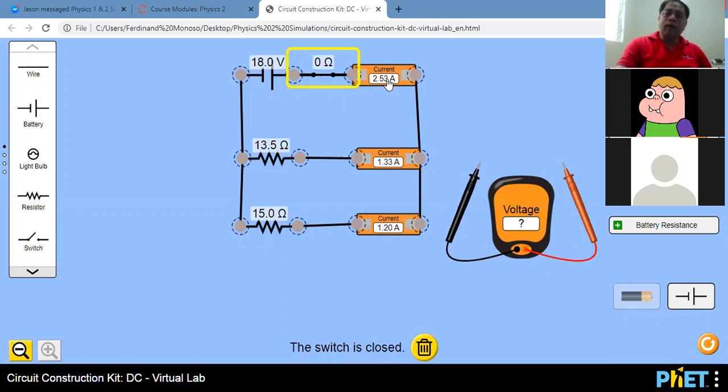And here are our currents. So the total current is 2.53, but I1 is 1.33 amperes, and I2 is 1.33 amperes. Can you record that one, please?